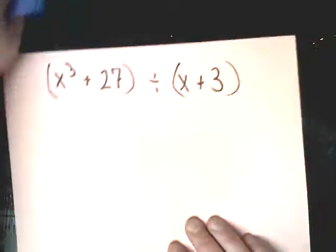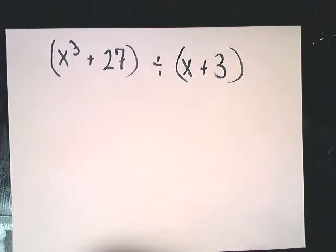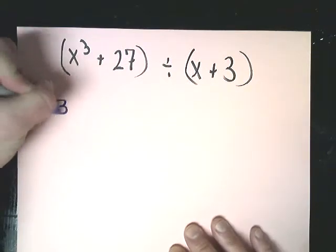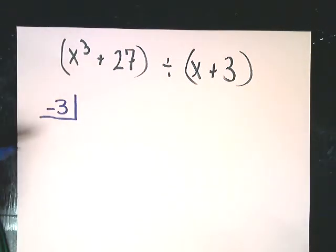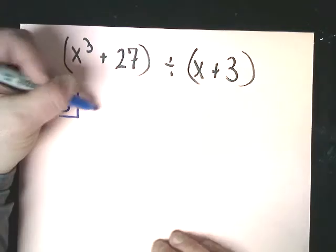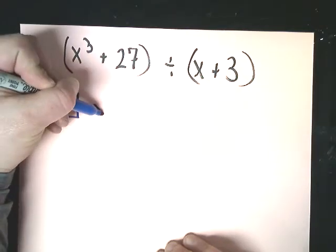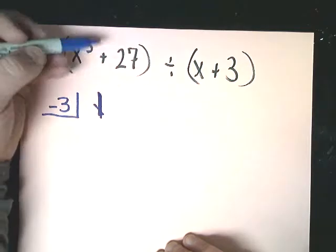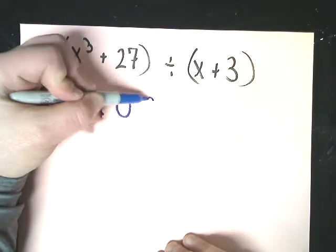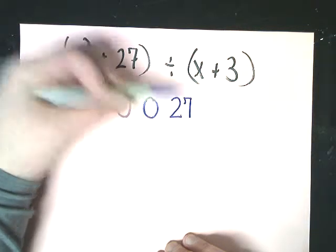So when you set up the synthetic, you want to change this sign. So negative 3. Then you want to start filling things in. Now you'll notice there's no x term and there's no x squared term. So what do you do with that? I put a 1 here for the x to the third. And then for the other ones, I'm going to put 0, 0, and then 27.